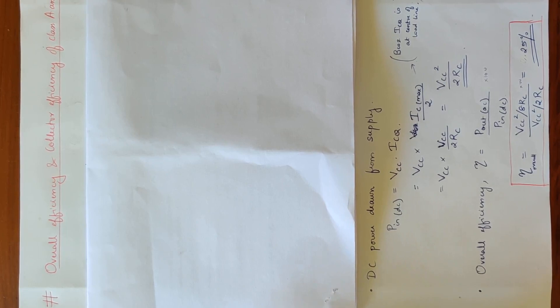Now we have to cover Class A power amplifier theory. We will state that overall efficiency is 25% and collector efficiency is 50%, and now we have to prove why it is 25% and 50%.